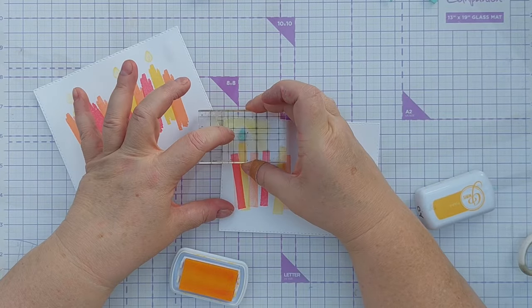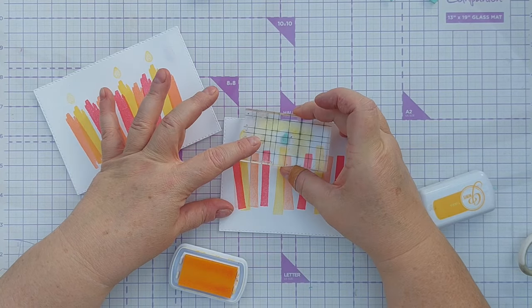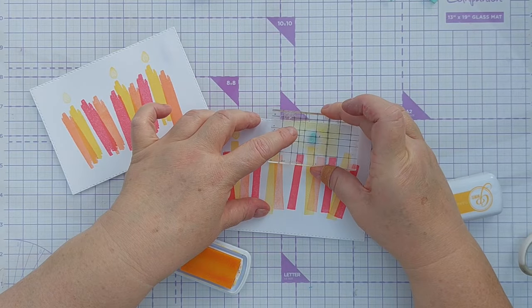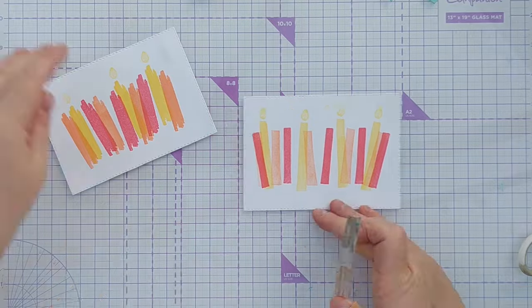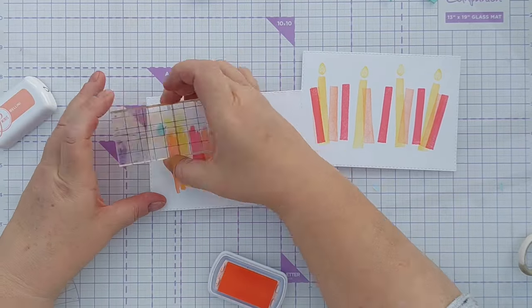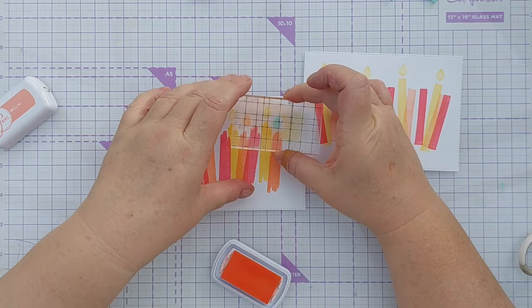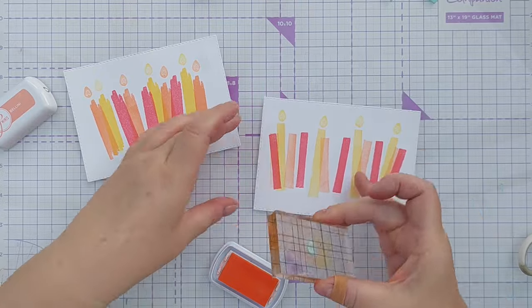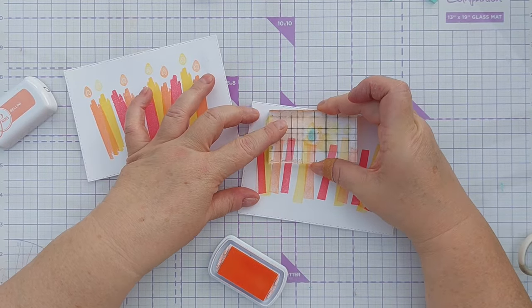You could, if you wanted, put different color flames onto the candle. So you could put the Bellini flames on the Tiara candles, or you can just do the same. You can angle these so they match the angle of the candle or go in a different direction. It's up to you.